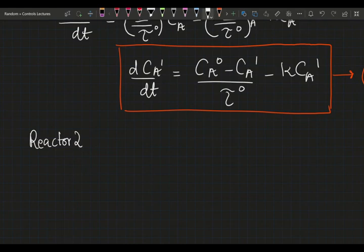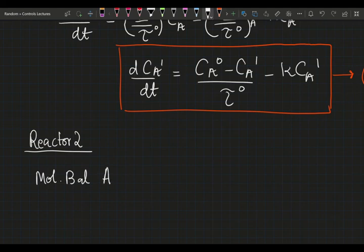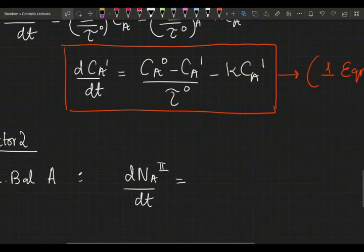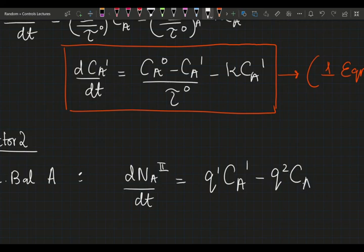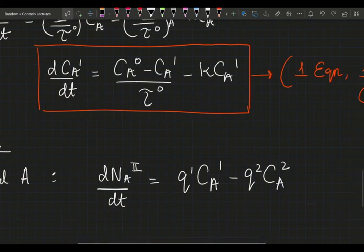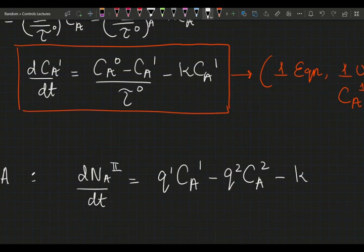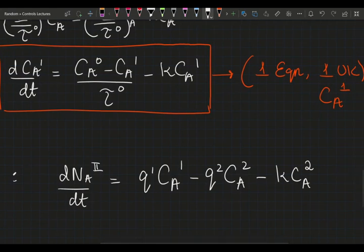Reactor 2 is going to follow the same structure for the mole balance of A. Exact same structure of the equation. You're going to have an accumulation term, obviously. Now, the inlet stream is Q1. Q1 multiplied by C_A1. And the exit stream is going to be Q2 times the concentration inside the second tank.